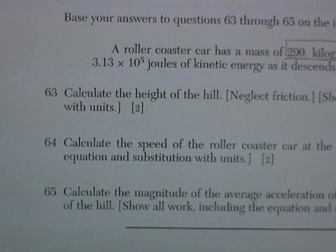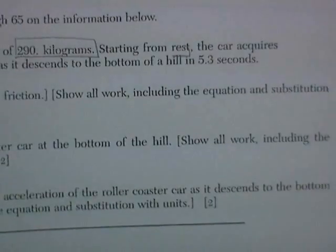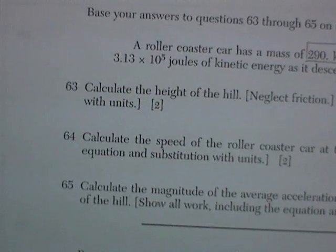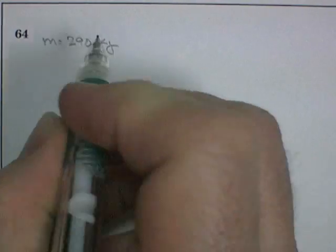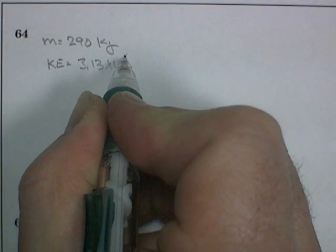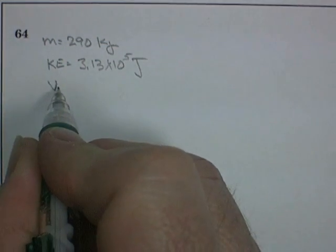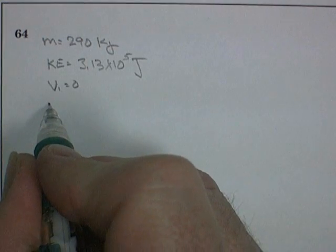Question 64. Calculate the speed of the roller coaster at the bottom of the hill. Show all work, including equation and substitution with units, for 2 points. So let's just list our knowns again. Mass is 290 kilograms. Its kinetic energy is going to be 3.13 times 10 to the 5 joules. And its initial velocity was equal to 0. And we want to know its final velocity.